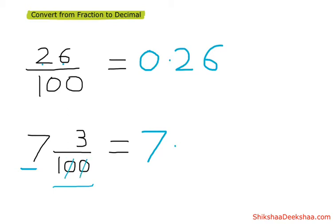We have to convert this three into a two-digit number, so we put a zero before three. Then we start counting from right to left — we have two digits for two zeros — and then we put the point: one, two, and then put the point. So our answer is seven point zero three.